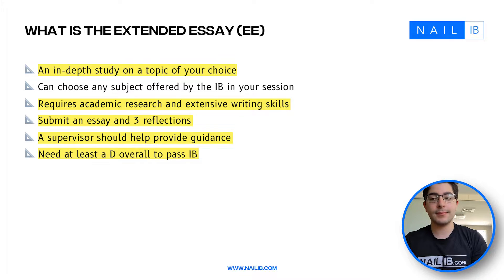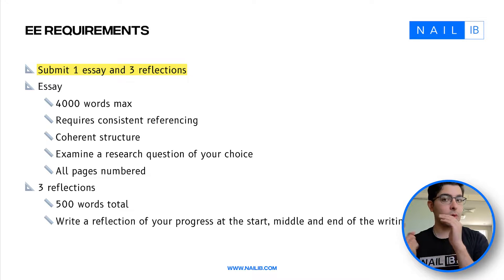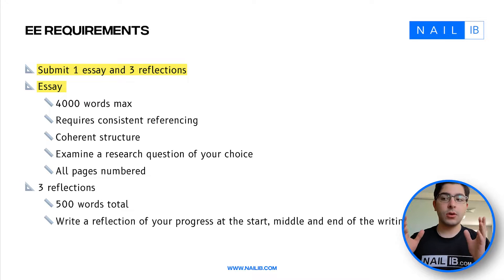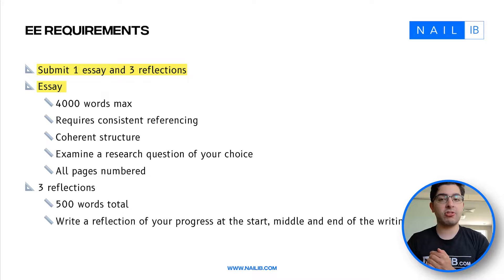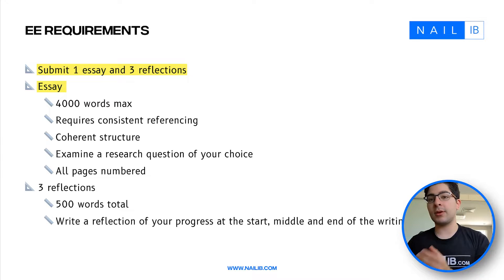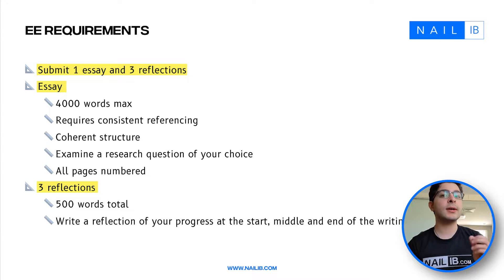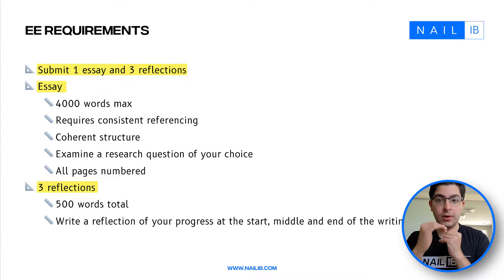The requirements are: you submit one full essay and three reflections. The essay has a maximum of 4,000 words, and within those you need consistent referencing, a coherent structure, and a research question that the whole essay aims to answer. You also need numbered pages. The three reflections should total no more than 500 words — if you go over, they won't read the extra. Same with the essay: if you exceed 4,000 words, they stop reading at that point. Do not go over the word limit.